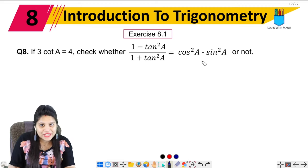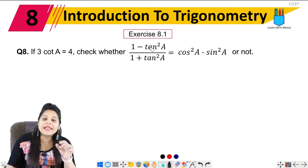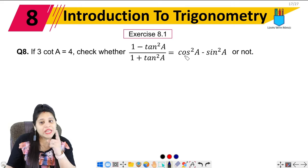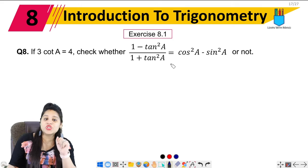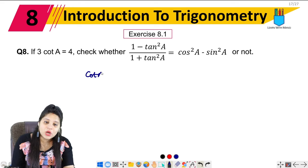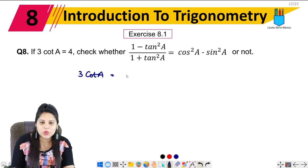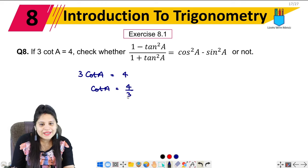So we need to prove and verify that this equality holds. For this, I need tan A, cos A, and sin A. What is given in the question? We have 3 cot A equal to 4, which means cot A equals 4 upon 3.